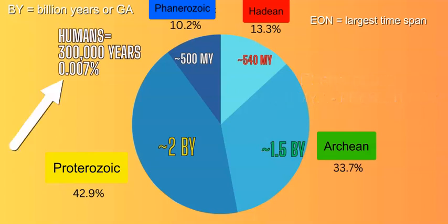In terms of the Earth's history, humans — Homo sapiens sapiens — have been on this Earth for around 300,000 years, which in relation to the overall age of the Earth is a very small amount, about 0.007%. So in reality, we've been here for a very short time, which is nice to put into perspective.